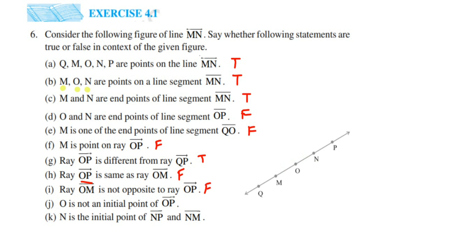The next statement is: O is not an initial point of ray OP. Again, this is a false statement. The initial point is nothing but the starting point. If OP is a ray, then O is the starting point and the ray extends towards and beyond P. The question says O is not the initial point, which is incorrect. So the answer is false.